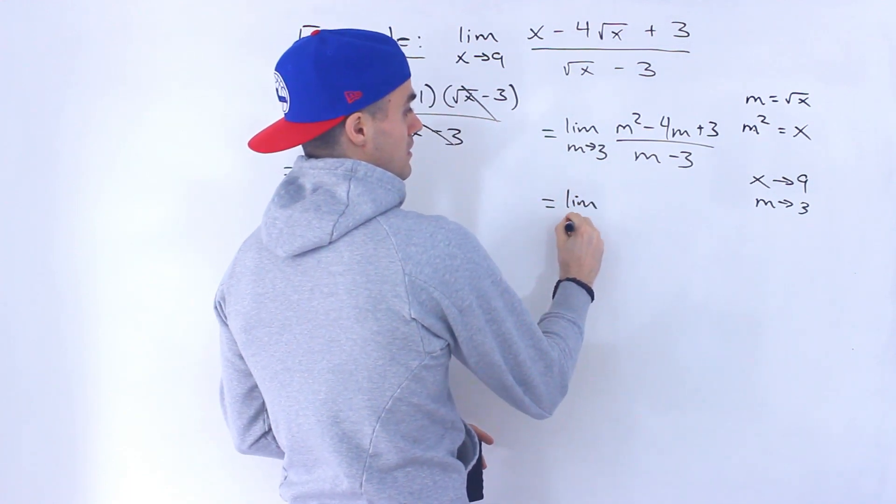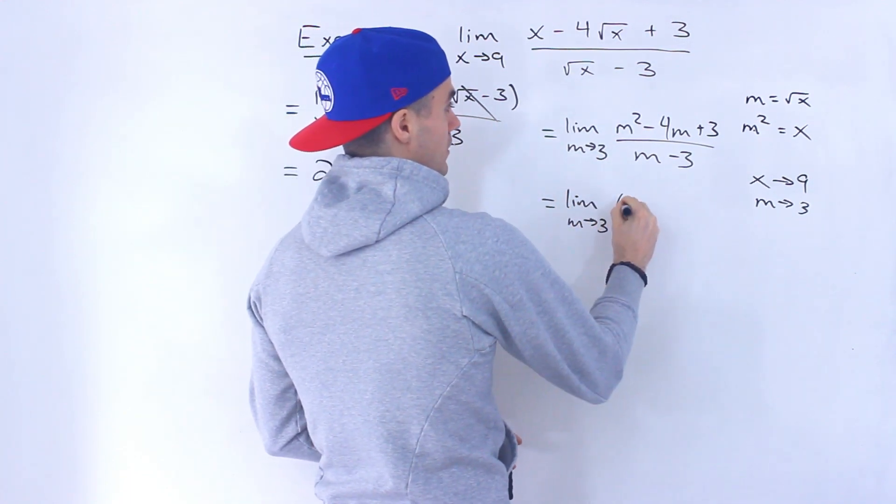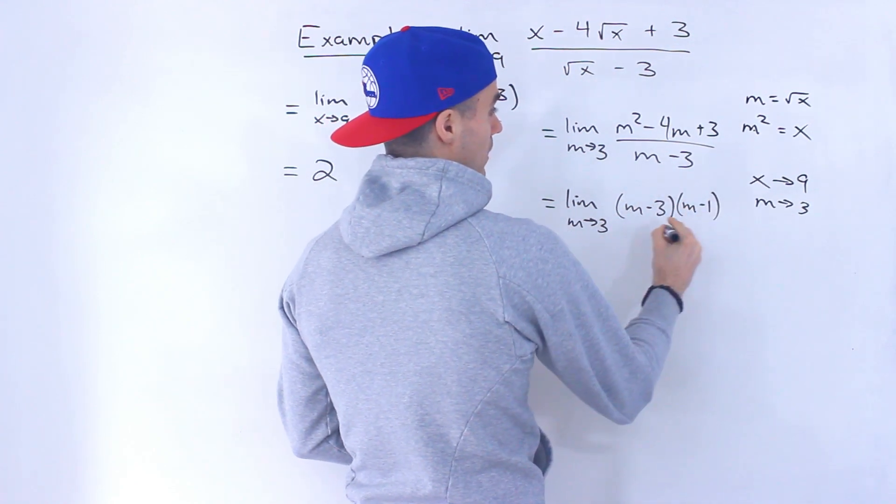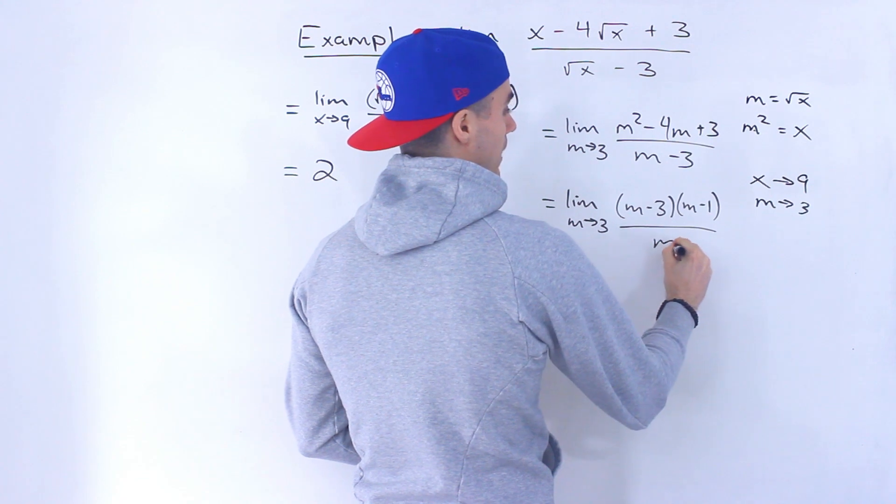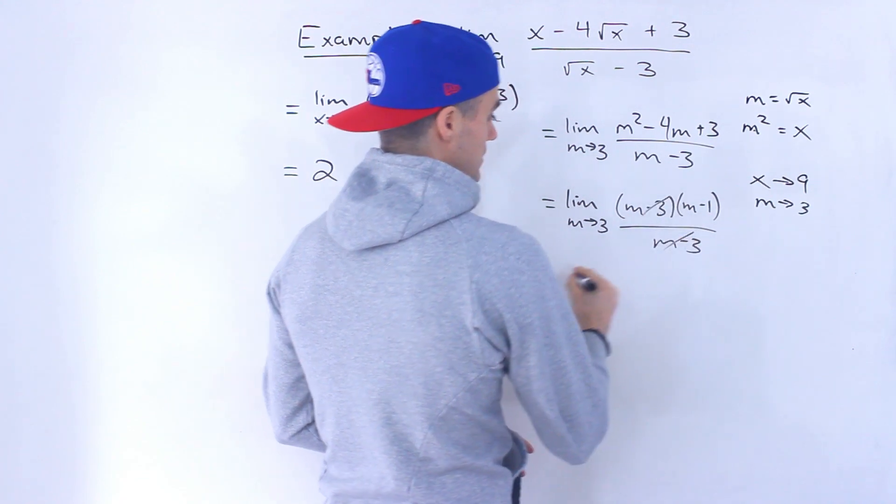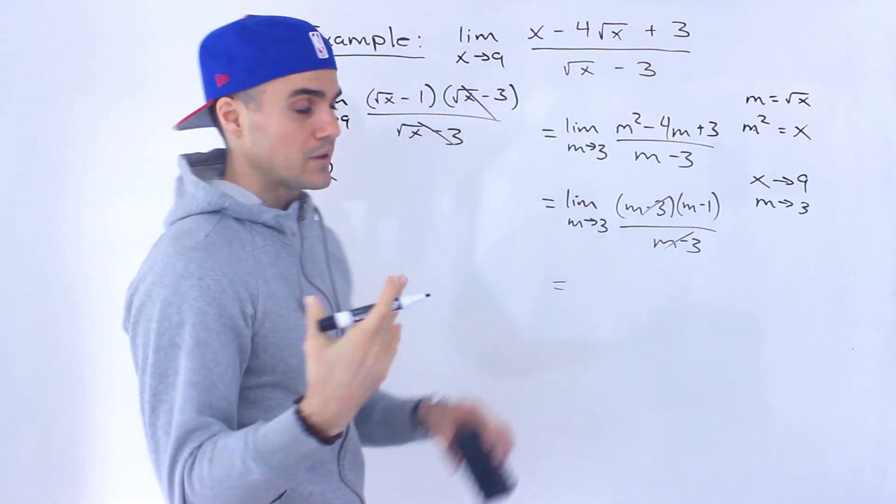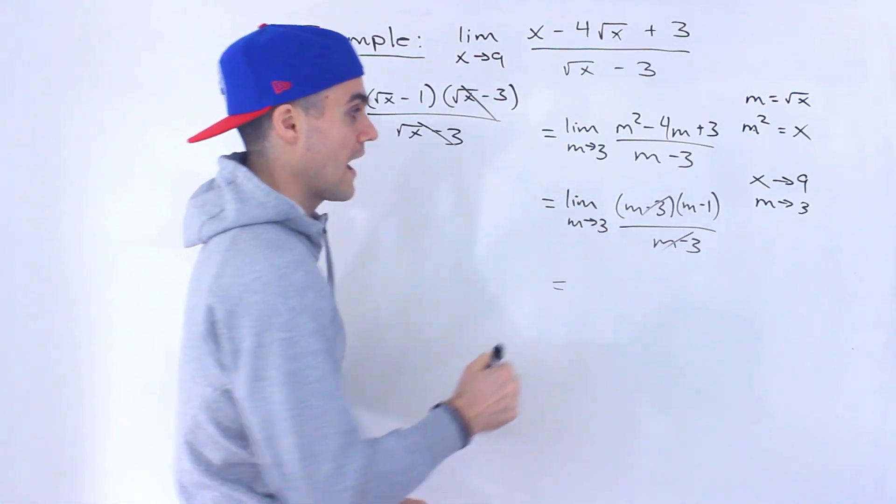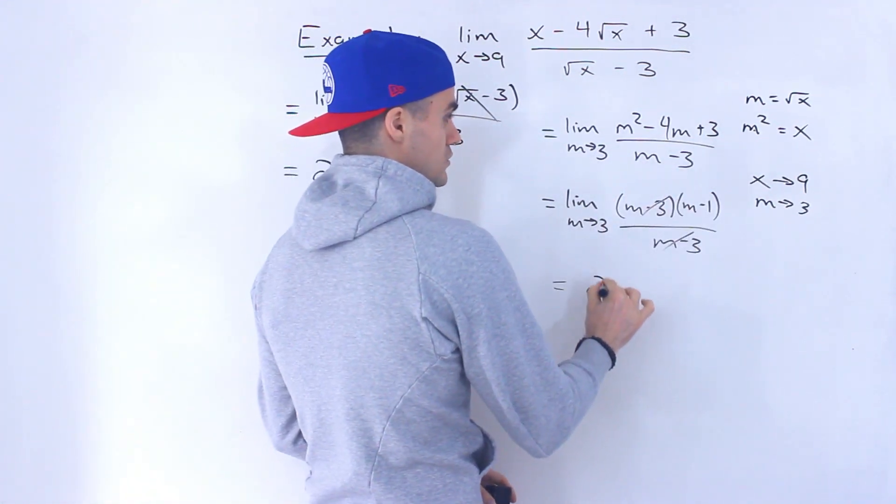So this here is going to be m minus 3, m minus 1, like that, over m minus 3. Notice the m minus 3's cancel out. And now we can substitute 3 for m. 3 minus 1 gives us 2.